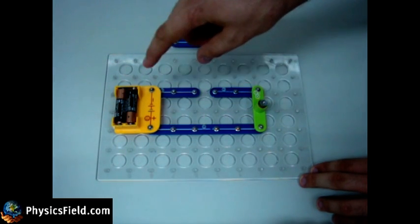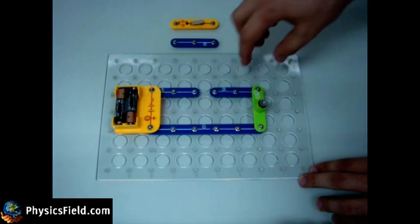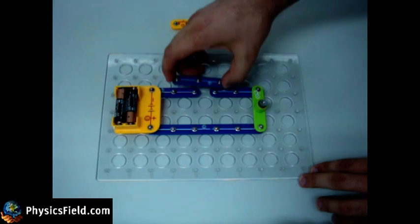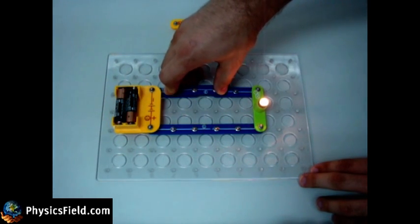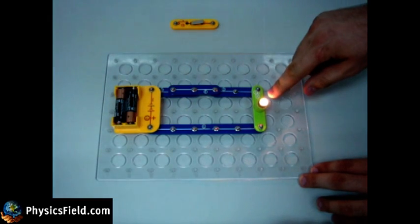Now there is no complete path for charges to flow around the circuit. If we place a wire here, the light bulb will glow.